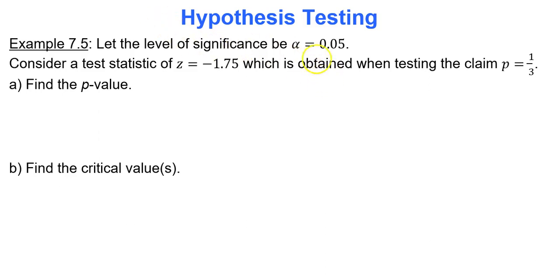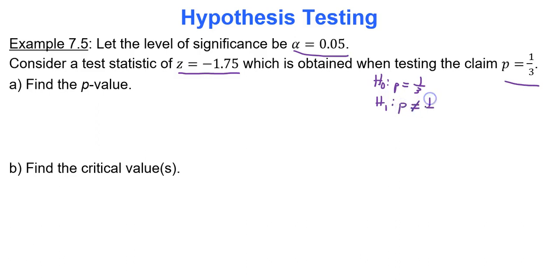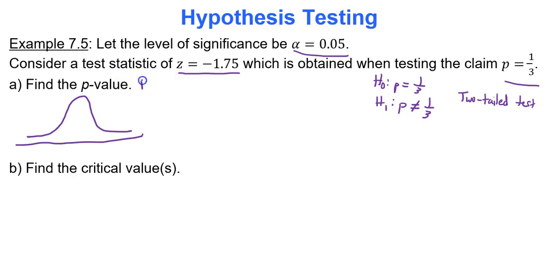Now let the level of significance be 0.05. Consider a test statistic of z equals negative 1.75, obtained when testing the claim p equals 1/3. If you write out the hypotheses, p equals 1/3 is the null and p not equal to 1/3 is the alternative. Let's find the p-value. This is a two-tailed test — not equal to means two-tailed. The p-value is always found from the test statistic.